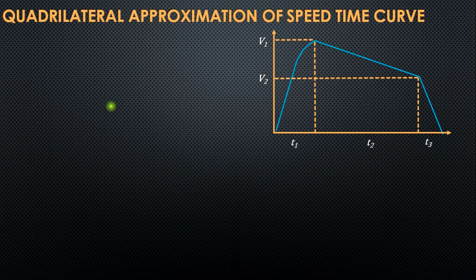Welcome everyone. In the last lecture we discussed the simplification of the speed-time curve of mainline services. In mainline services we have the free running period, which is why the speed-time curve was very much similar to a trapezoidal shape, and we approximated that curve to its close trapezoidal form. We found out the area under the curve by calculating the area of two triangles and a rectangle. But in urban and suburban services, as the free running period is absent, the curve looks different and cannot be approximated to its trapezoidal form. So another method of simplification is to be used.